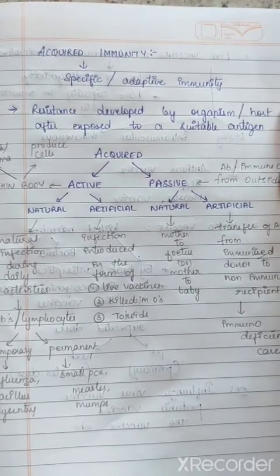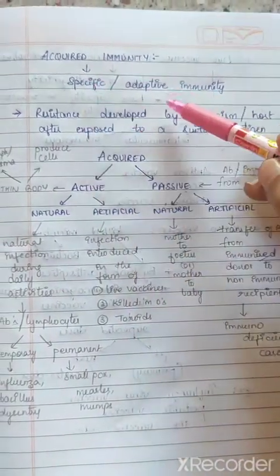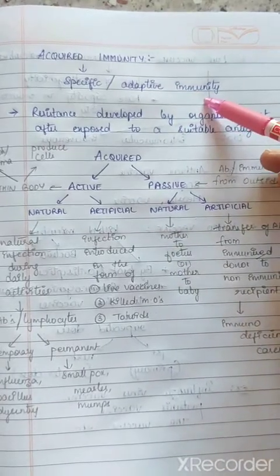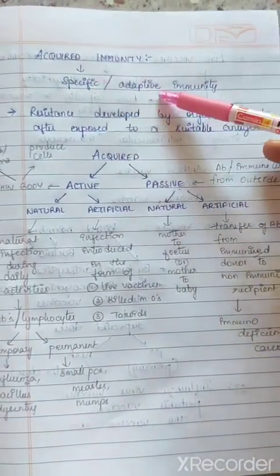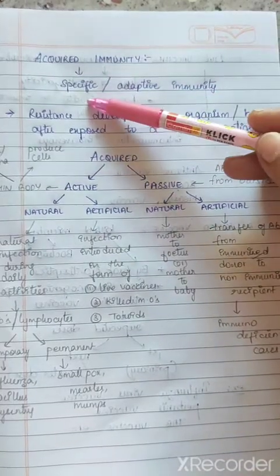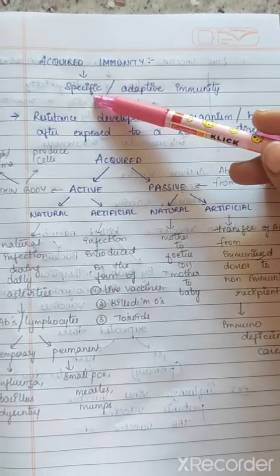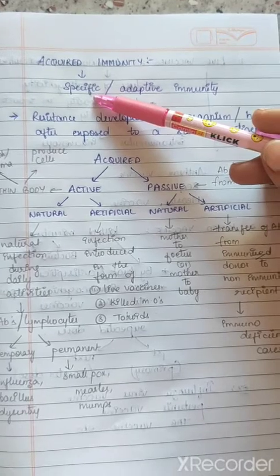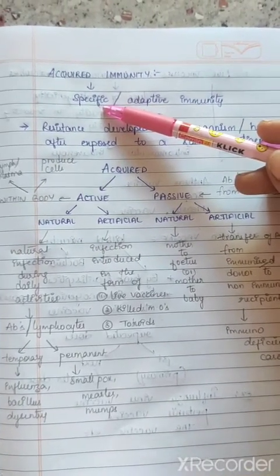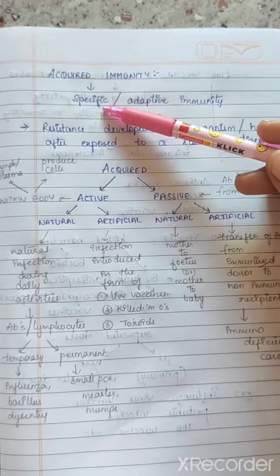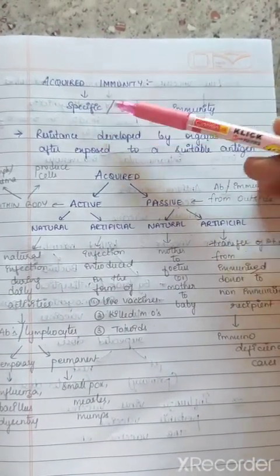Acquired immunity is also called as specific immunity or adaptive immunity. Why is it called specific immunity? Because this immunity is specific to specific antigens or specific microorganisms. This immunity is developed against specific microorganisms, so it is called specific immunity.